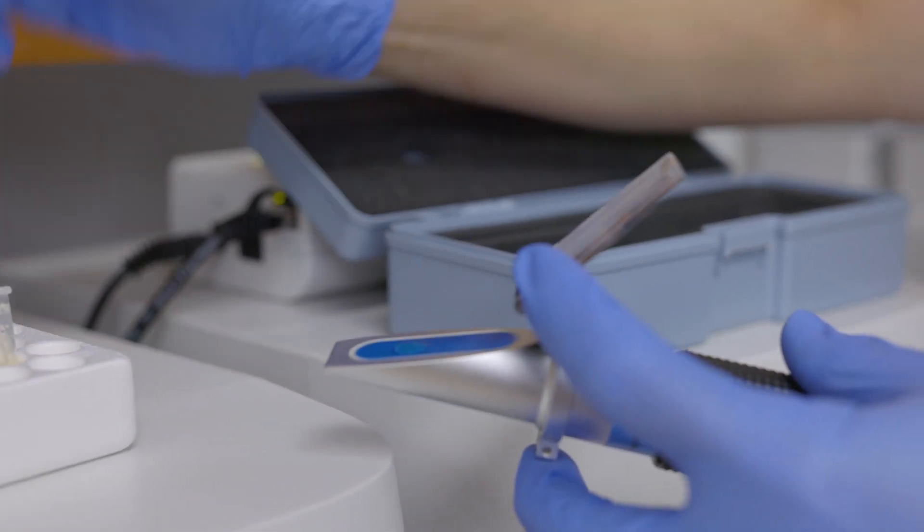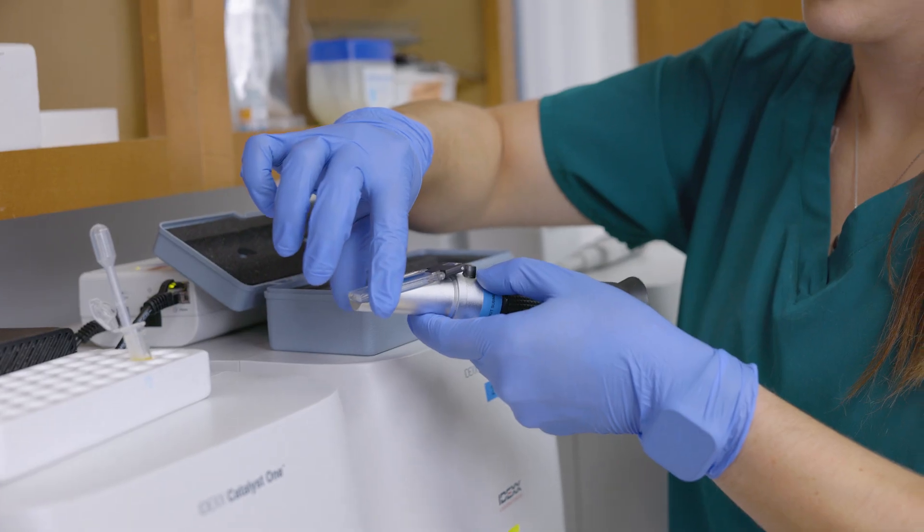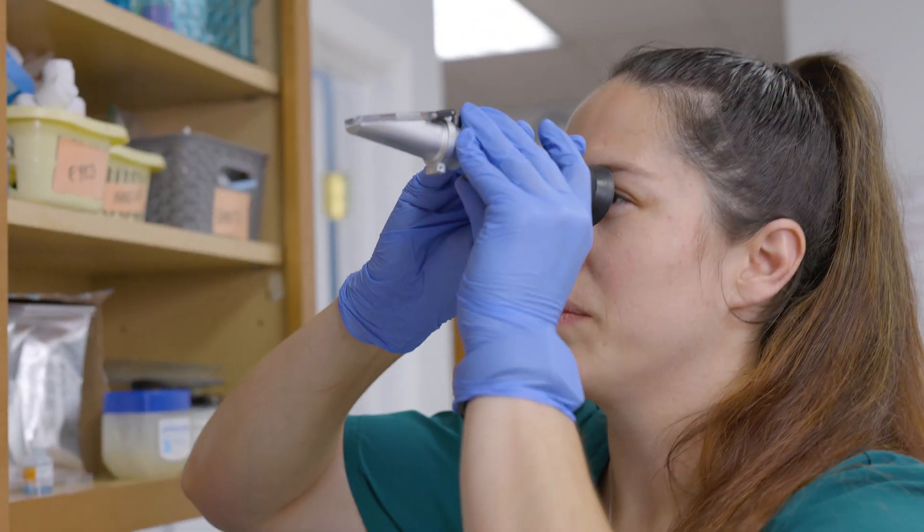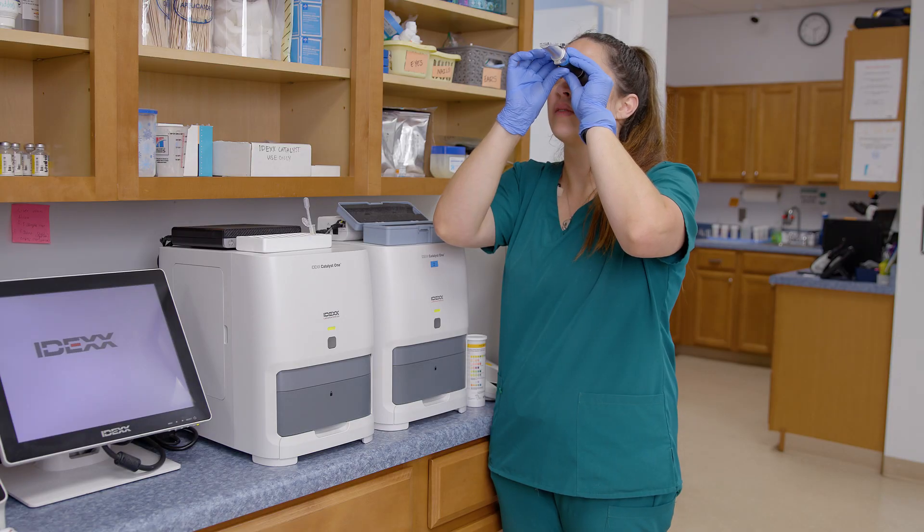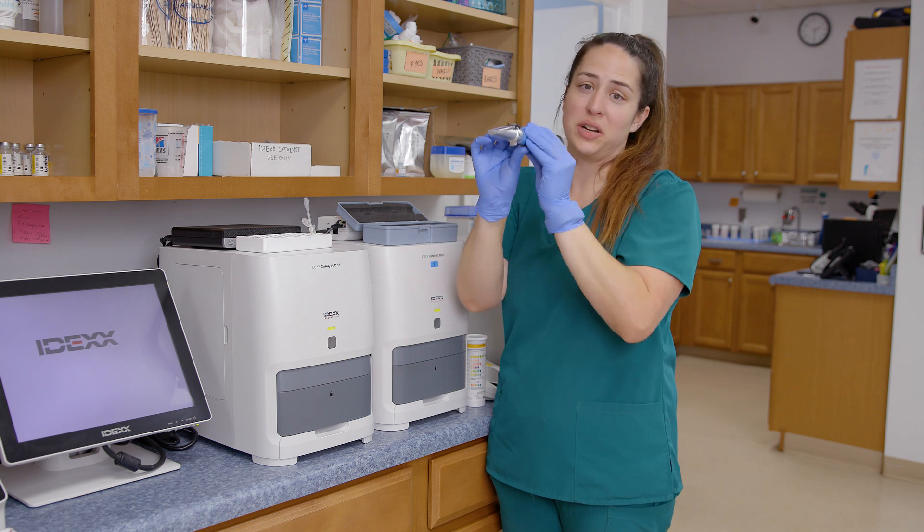And then we will close the lid to this. And then we will look at it to evaluate. And it looks like our results for this urine specific gravity is greater than 1050, so off of the graph.